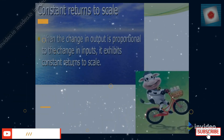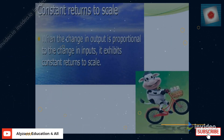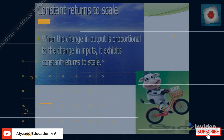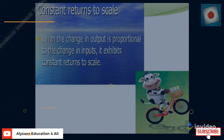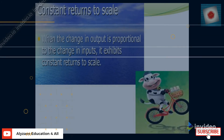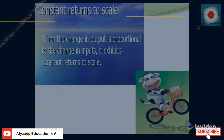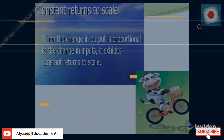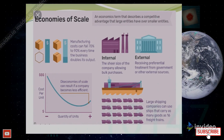Constant returns to scale occur when the change in output is proportional to the change in input — that is, the firm exhibits constant return to scale.